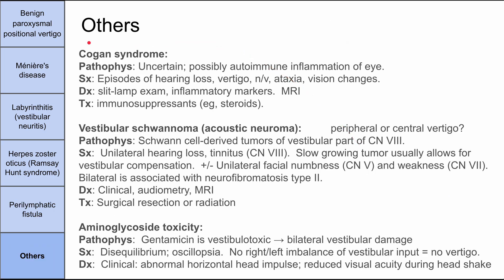A less common cause is Cogan syndrome. The pathophysiology is uncertain but thought to be autoimmune inflammation of the eye. Patients have episodes of hearing loss, vertigo, nausea, vomiting, ataxia, and vision changes. Diagnosis involves a slit lamp exam and inflammatory markers like CRP and ESR. A new MRI test that may identify autoantibodies is currently being studied. Treatment is immunosuppressants such as steroids.